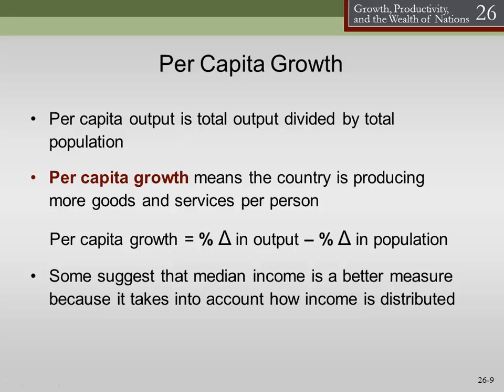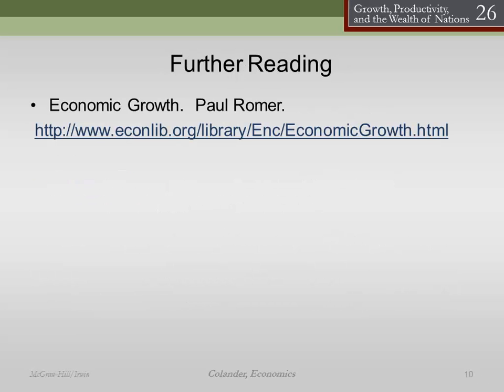Some suggest that median income is a better measure because it takes into account how income is distributed. If you have data with a lot of skew — for example, 15 people in a room and you take the average income, then you bring in Bill Gates — the median is going to be far less affected by the addition of that outlier than the average will be. Some say it's a better measure of central tendency and it's less subject to skew. But generally we still just use average because it's easier. If you want further reading, I highly recommend Economic Growth by Paul Romer.